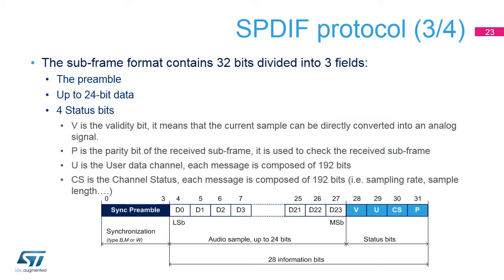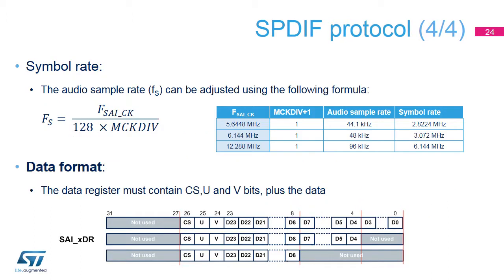Each subframe contains 32 bits divided into three fields: a synchronization preamble allows the detection of the block and subframe boundaries, a payload of 24 bits, and status bits V, U, CS, and P. The SAI-CK frequency must be adjusted in order to generate the proper audio sample rate, or FS. The data inside the transmit FIFO must be aligned as shown in this slide. The MSB of the data must always be at position 23.